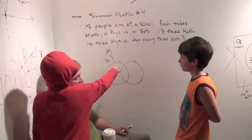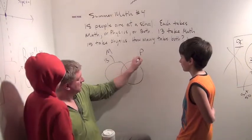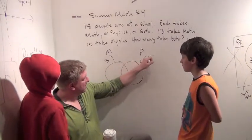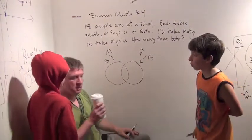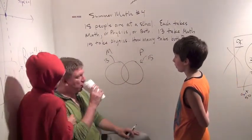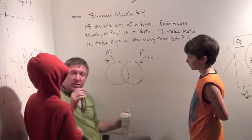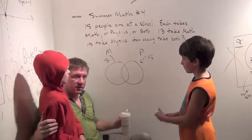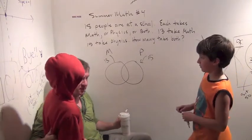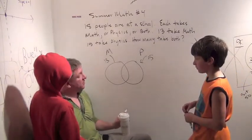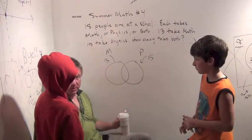I'll just call that M. And there's how many of those? There are 13 people taking math. 13 inside of the circle, but we don't know where they're divided. And then in this circle, it's physics, and there's 15. But 13 plus 15 adds up to 28. We have 18 people at the school, so there must be some people taking both, right?